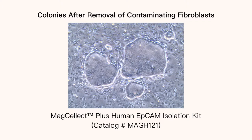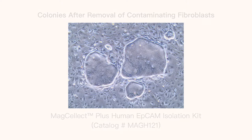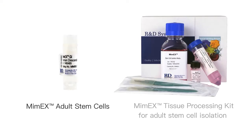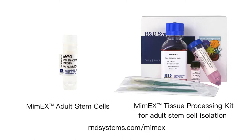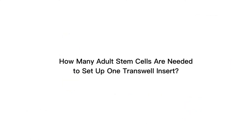Images on the screen show examples of adult stem cell expansion cultures with host tissue fibroblast growth. If fibroblast contamination is detected, the culture can be cleaned up using the MAG Select Plus Human EpCAM isolation kit. R&D Systems also provides Mimics adult stem cell lines, which are cryopreserved as high-density purified populations and are already free of host tissue fibroblast contamination.